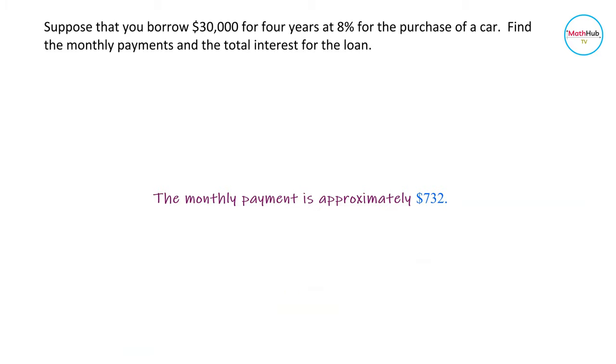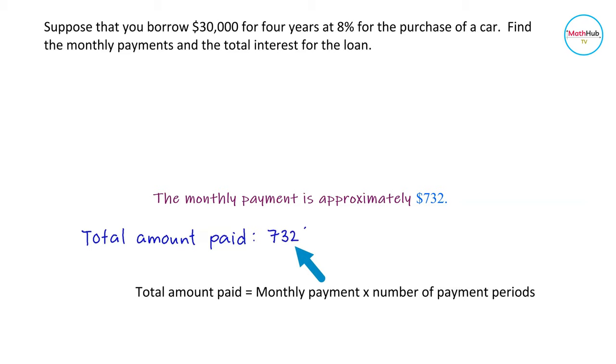To compute for the total interest for the loan, compute first the total amount paid for the loan. It is computed by just multiplying 732 by 12 and then times 4 because you're paying for 4 years.